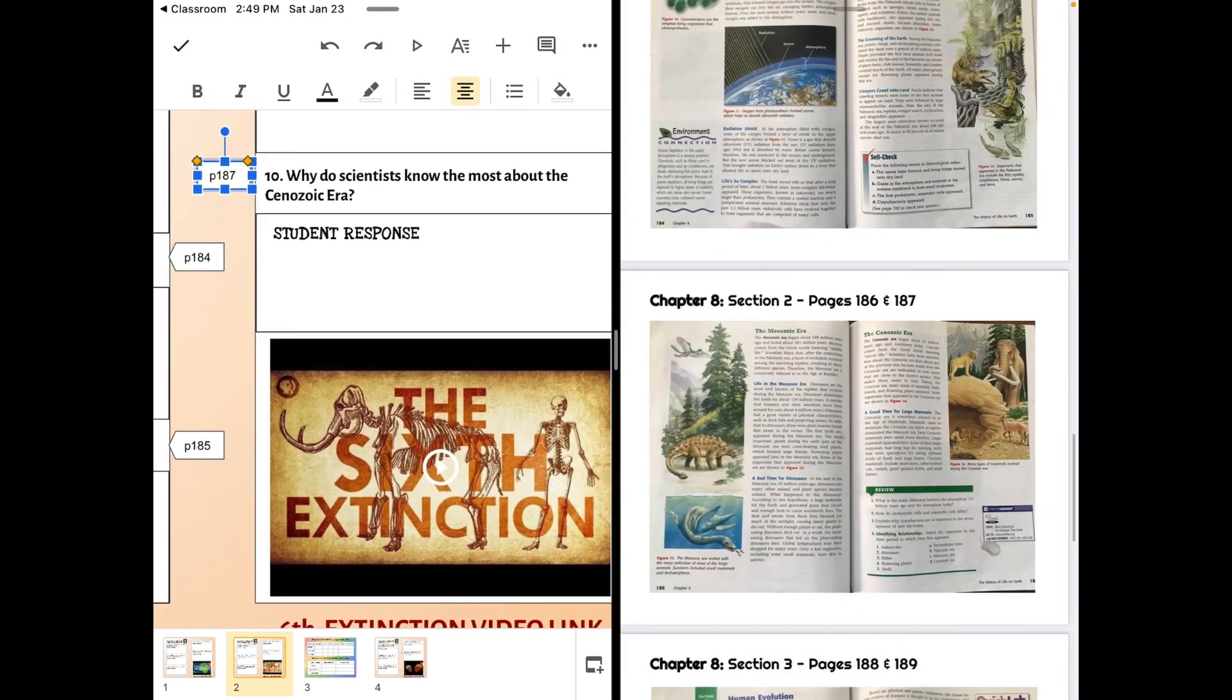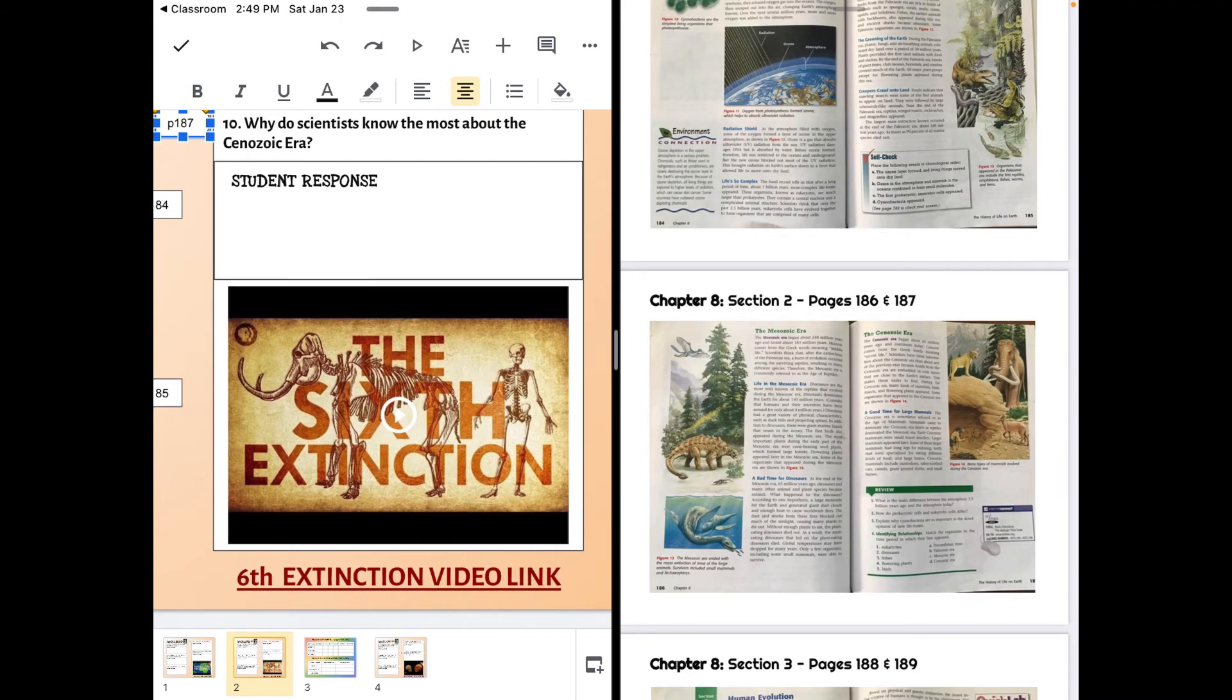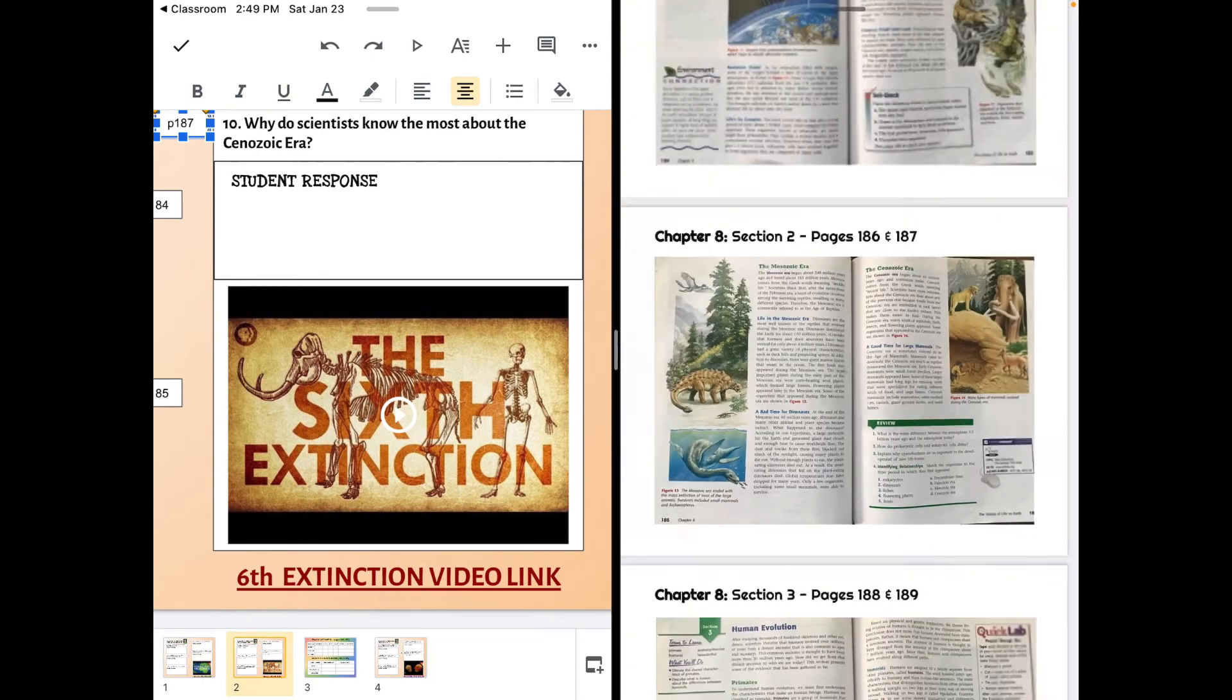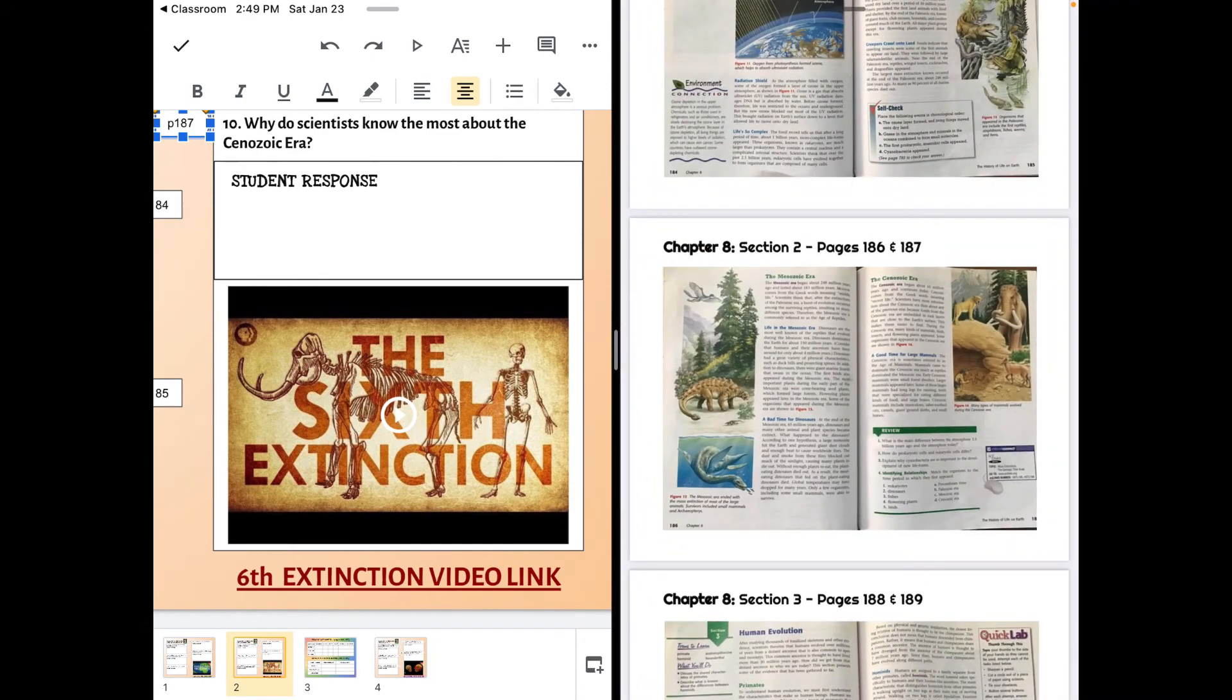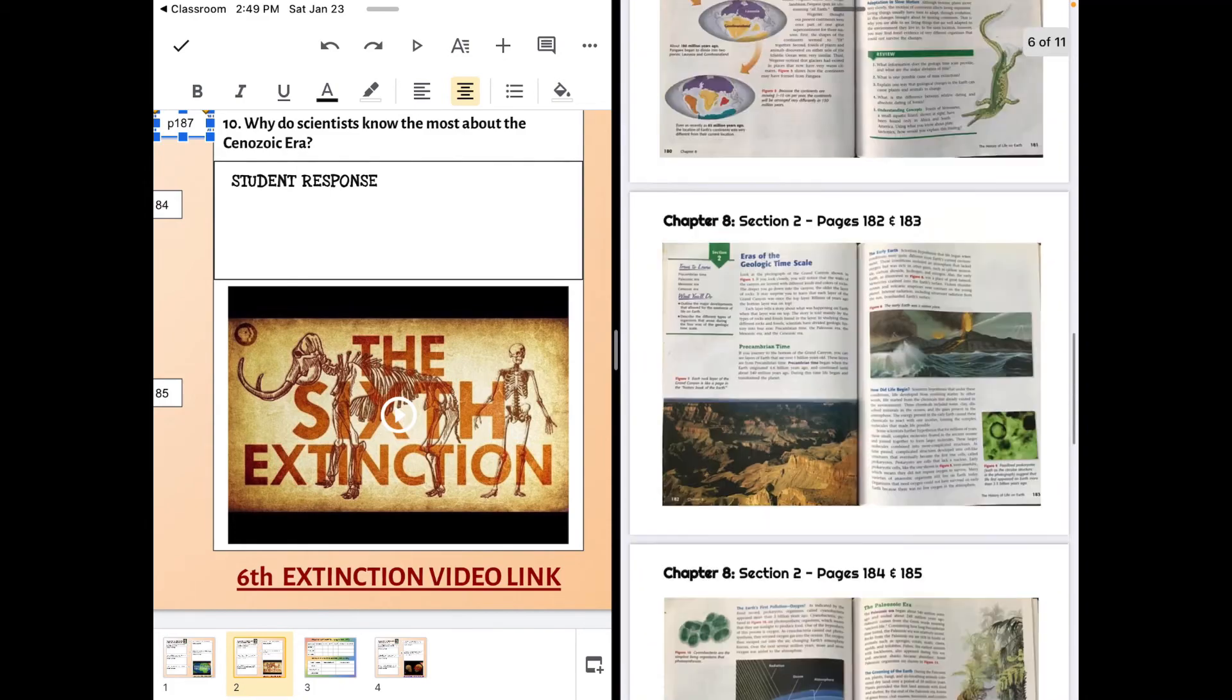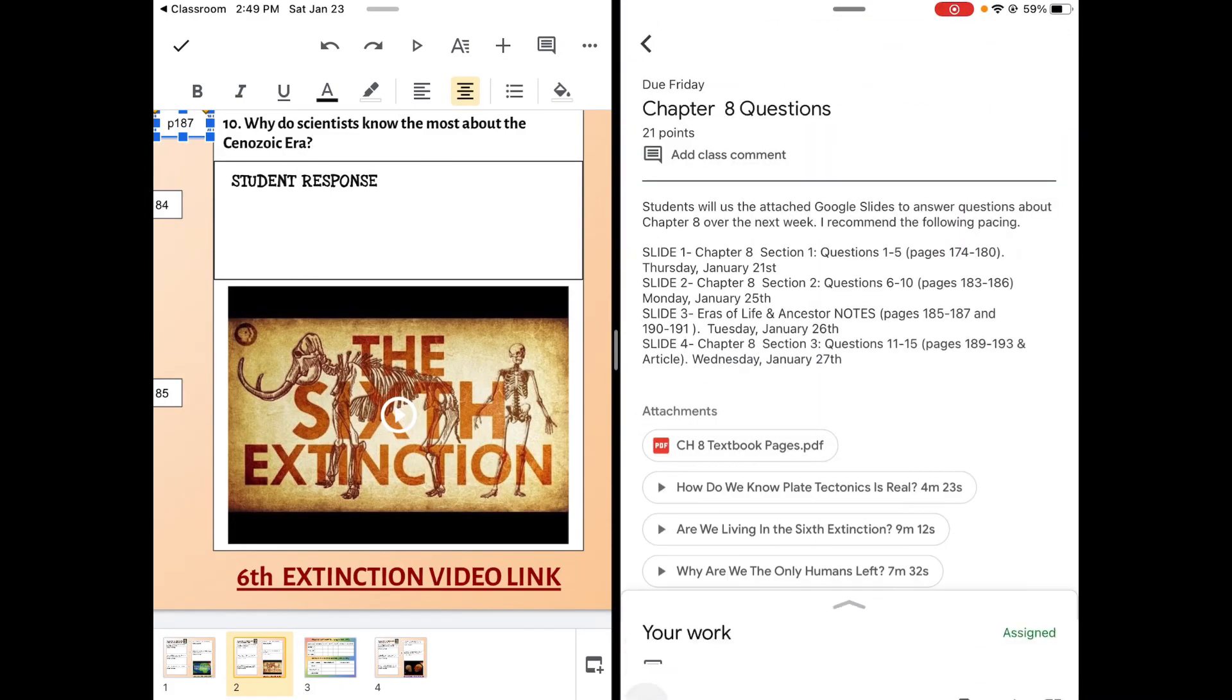The video, the sixth extinction, talks about mass extinctions. So not just the end of the dinosaur time, but there have been five mass extinctions recorded in the fossil record that we can plainly see. And there is an argument that we are headed into the sixth mass extinctions. So that video is linked. If you want to go a little further and a little deeper, it's the second video link on this page.